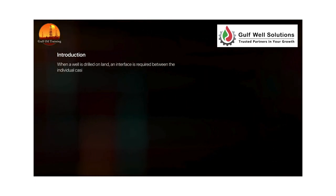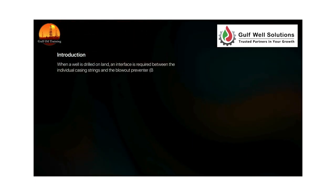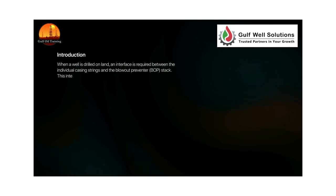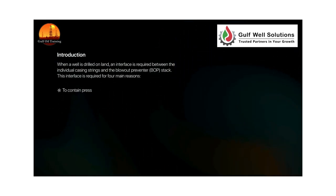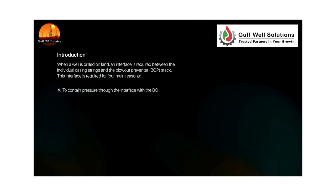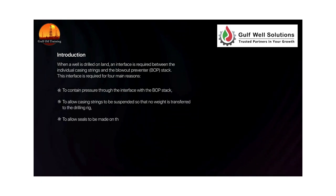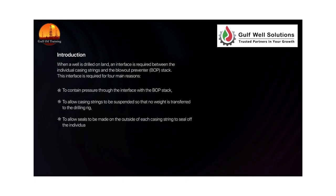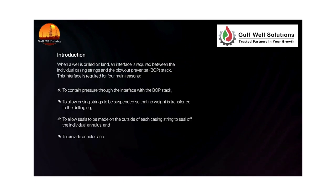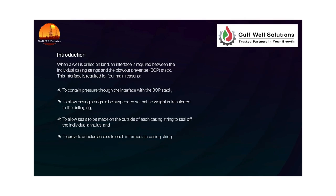When a well is drilled on land, an interface is required between the individual casing strings and the blowout preventer or BOP stack. This interface is required for four main reasons: to contain pressure through the interface with the BOP stack; to allow casing strings to be suspended so that no weight is transferred to the drilling rig; to allow seals to be made on the outside of each casing string; and to seal off the individual annulus and to provide annulus access to each intermediate casing string and the production casing string.